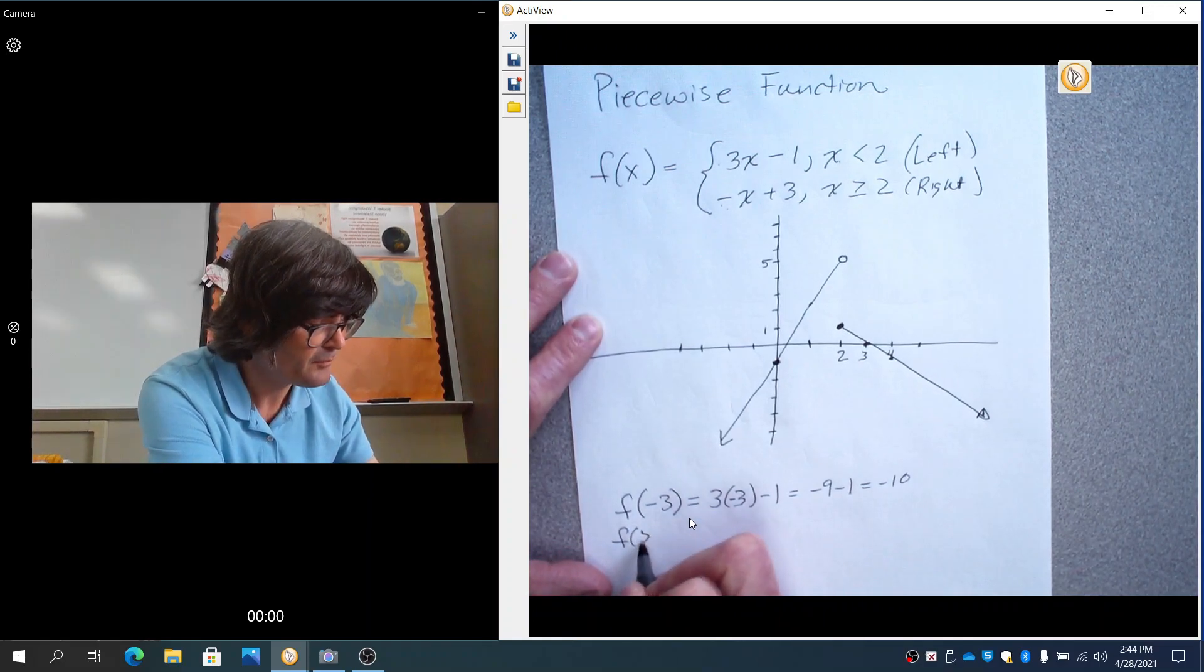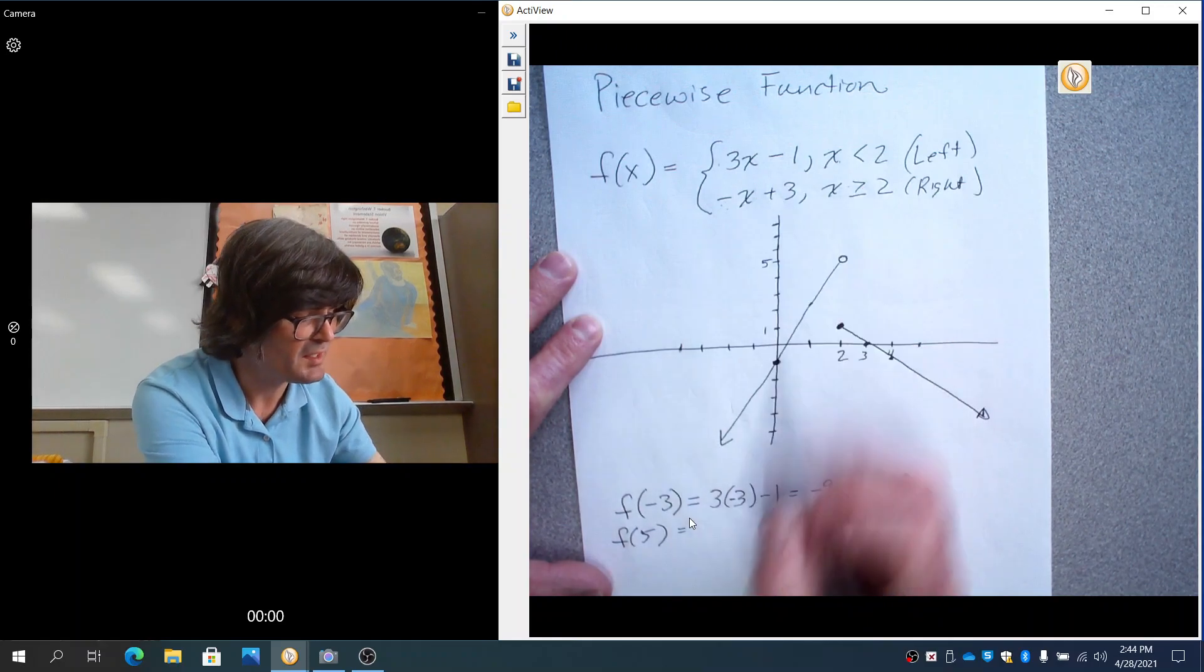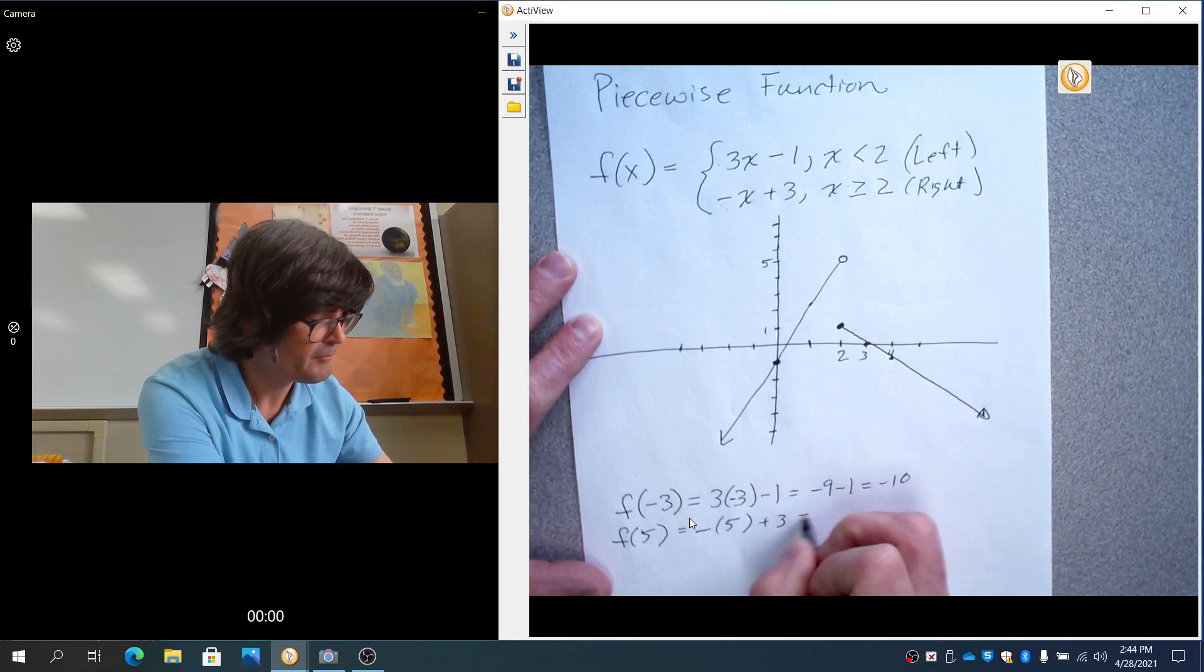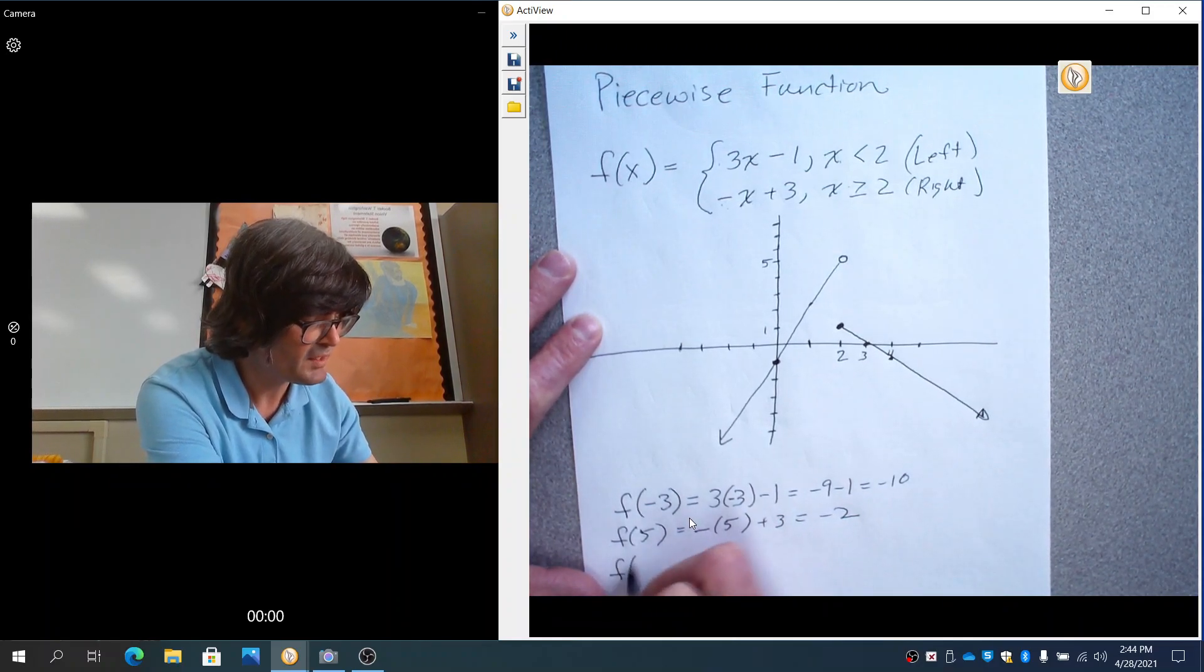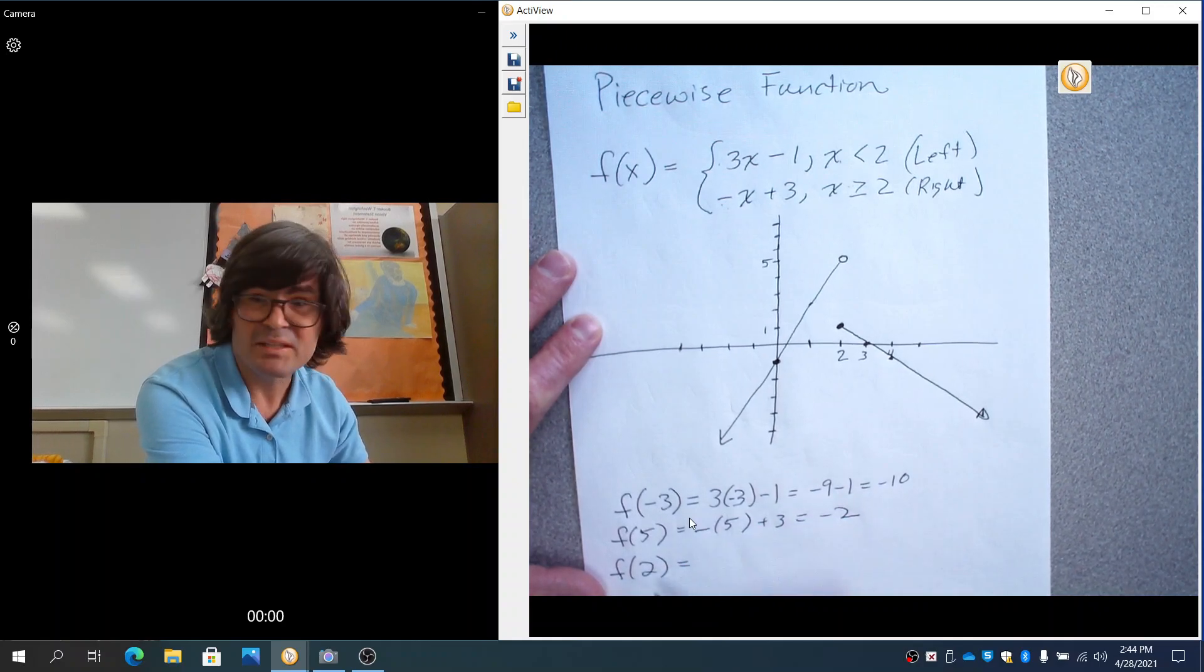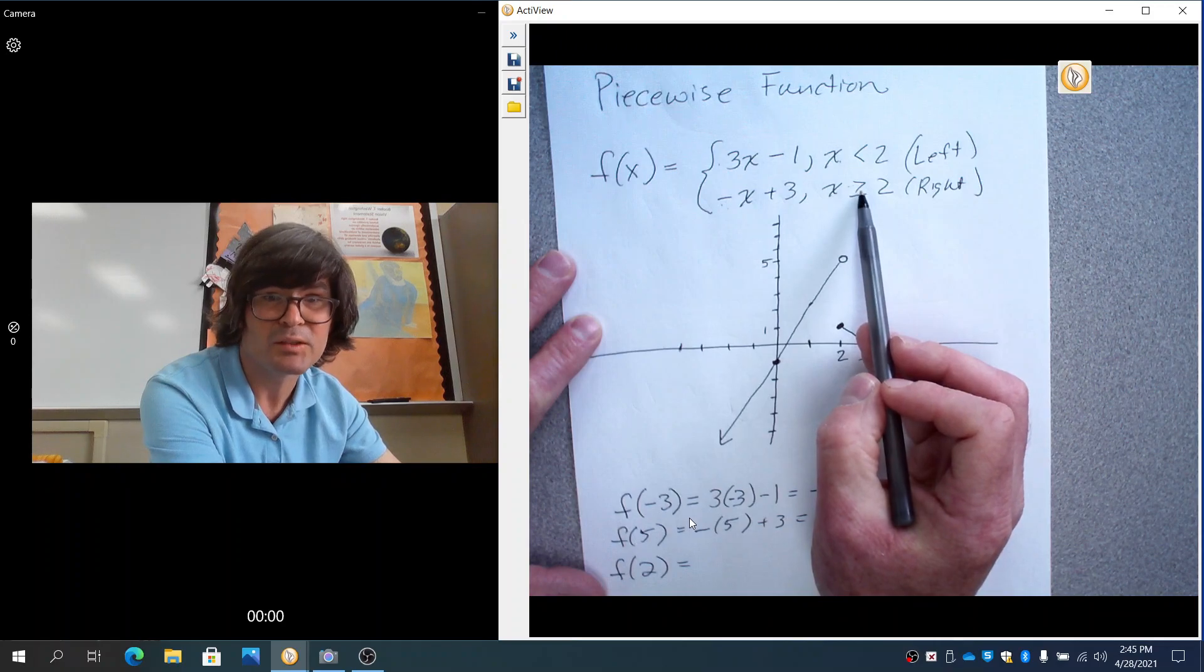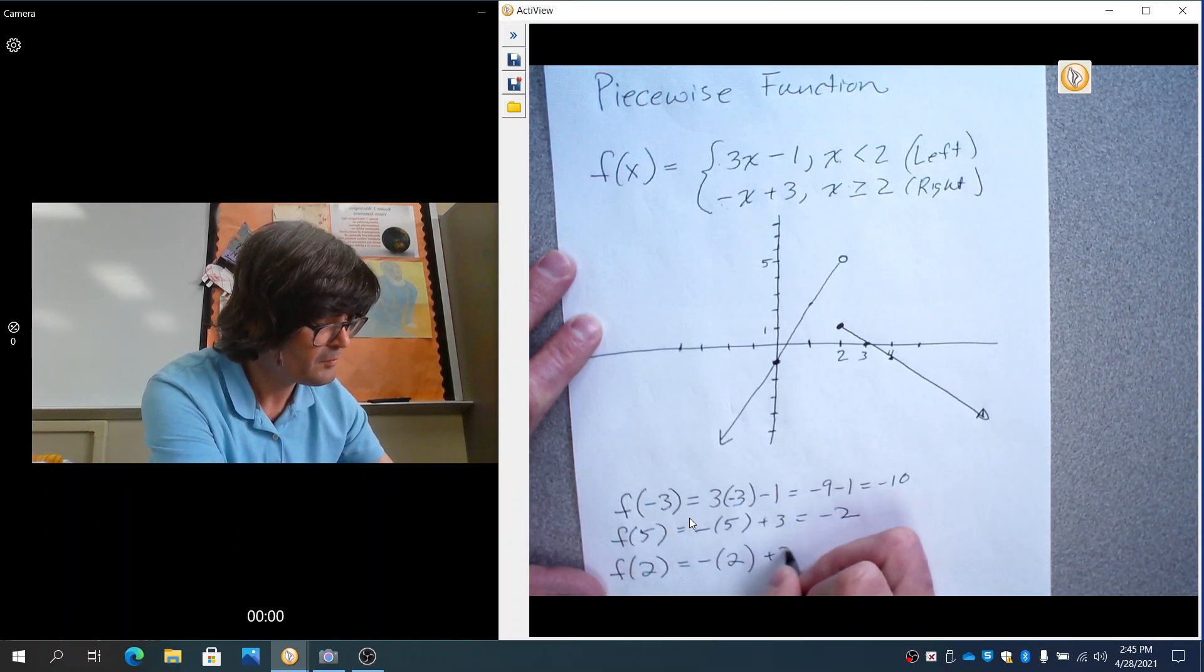If you did f of 5, 5 is bigger than or equal to 2, so that goes in this piece. Negative 5 plus 3 is negative 2. If you did 2, this one's kind of tricky. Which piece does 2 go with? Well, it goes with the bottom one because this is x is bigger than or equal to 2, so this would be negative 2 plus 3. That makes positive 1.